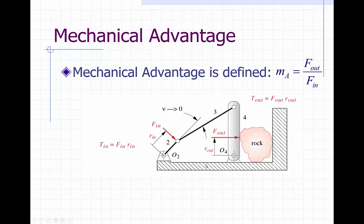Here we have a rock crushing mechanism. It's a traditional four-bar on the left, so we have a crank, a coupler, a rocker, a ground link, and we have a rock sitting right between the rocker and a wall. It looks as though as we press in with a force at the crank-coupler joint, we'd expect motion of the rocker in this direction, where the output force where the rocker touches the rock would be large enough to crush the rock between the rocker and the wall.